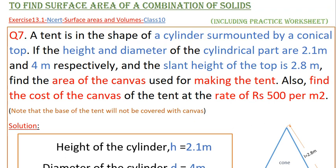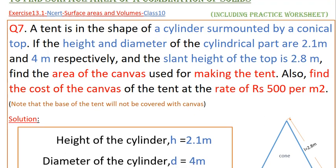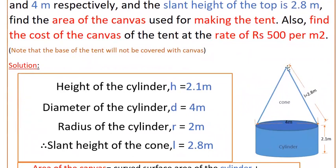So here the tent is in the shape of a cylinder which is surmounted by the cone. So here we have to find the area of the canvas used for making the tent, that is excluding the base area of the cylinder. So first write the given values here.